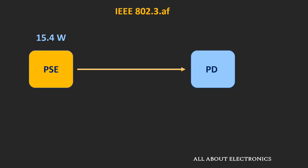Under IEEE 802.3af, the maximum power which can be supplied by the PSE is 15.4W, and the maximum power which can be received by the powered device is 12.95W. The received power will be less compared to the supplied power because some of the power will be lost across the cable resistance.